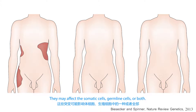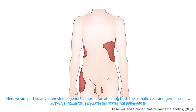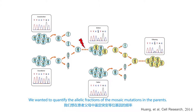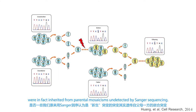Here, we are particularly interested in genomic mosaicism affecting both somatic cells and germline cells. We wanted to quantify the allelic fractions of the mosaic mutations in the parents. Furthermore, we wanted to find out whether any of the de novo mutations were in fact inherited from parental mosaic carriers undetected by Sanger sequencing.